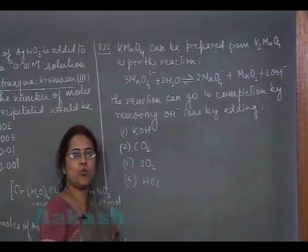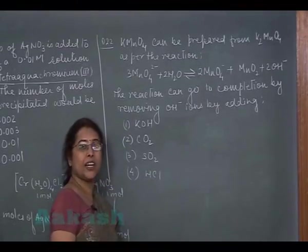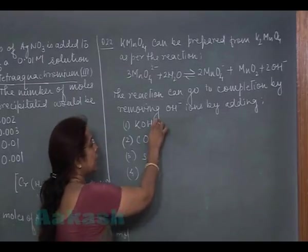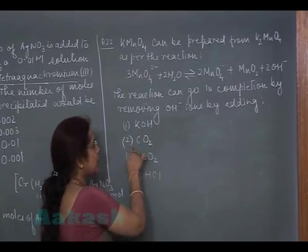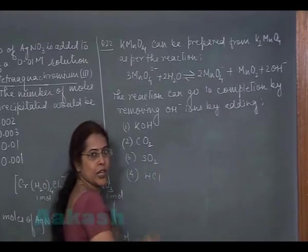Now here we have to remove OH ion. So OH ion is basic. It can be removed by addition of any acid. So see the option, KOH cannot be used. We can use CO2, we can use SO2, we can use HCl.